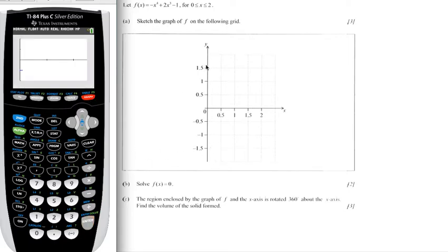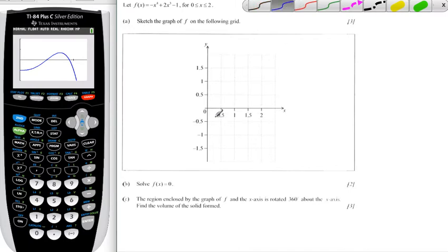So we want this to be the same screen as here, which makes our sketch easier. Then we can see that here, when x is 0, you get negative 1.